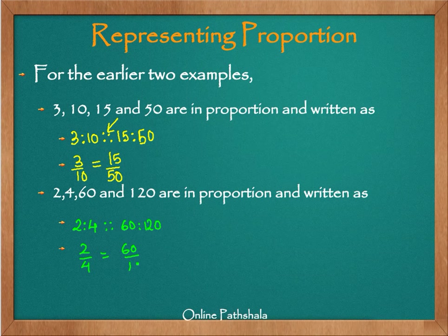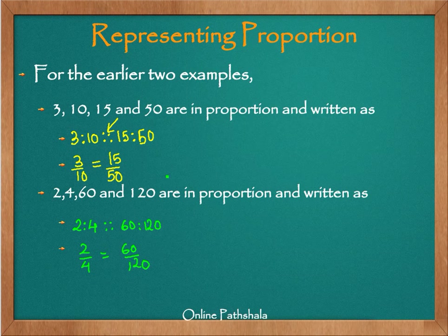Or using the equal-to sign: 2 by 4 is equal to 60 by 120. A simple observation about proportion is that if two ratios are equivalent, they are in proportion. This is essentially the concept of equivalent fractions, where we find other fractions by multiplying or dividing the numerator and denominator by the same number. Two ratios are in proportion if they have the same simplest form.